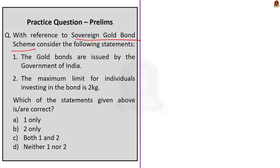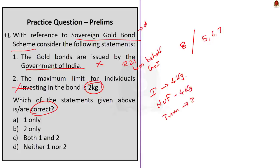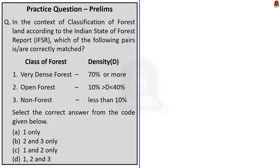The fourth question is regarding Sovereign Gold Bonds. Statement 1: The Gold Bonds are issued by the Government of India — this is wrong because Sovereign Gold Bonds are government securities issued by the Reserve Bank of India on behalf of the Government of India, with a tenor of eight years and exit options in the fifth, sixth, and seventh year. Statement 2: The maximum limit for individuals investing in the bond is 2 kg — this is also incorrect because the upper limit for individuals is 4 kg, for HUFs is also 4 kg, and for trusts and similar entities is 20 kg. Since both statements are incorrect, the correct answer is option D: neither one nor two.